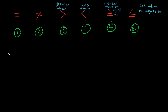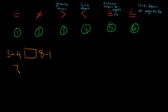With the first one, if I wrote down three plus four and eight minus one, which of these symbols would be appropriate to compare these two quantities? On the left side we have three plus four, which reduces down to seven, and eight minus one also reduces down to seven. So in this case the equal sign is appropriate — seven is equal to seven. If both sides equal each other we just use an equal sign.